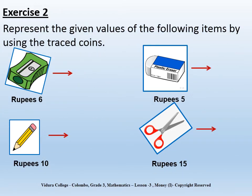Exercise 2: represent the given values of the following items by using the traced coins. The first item is a sharpener — it is six rupees. The second item is a pencil — it is ten rupees. The third item is an eraser — it is five rupees. And the last item is a pair of scissors and it is fifteen rupees. So let's get started.